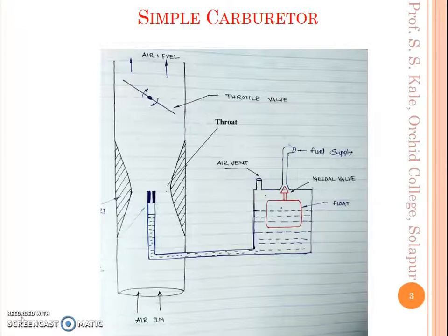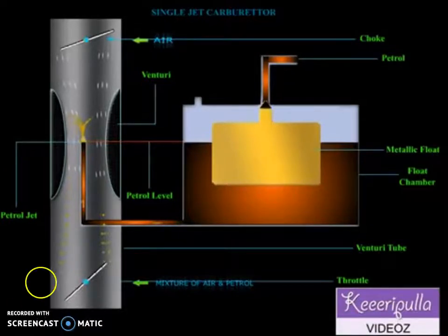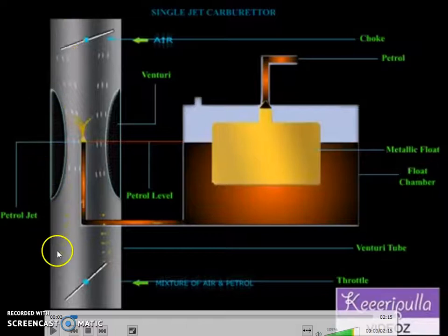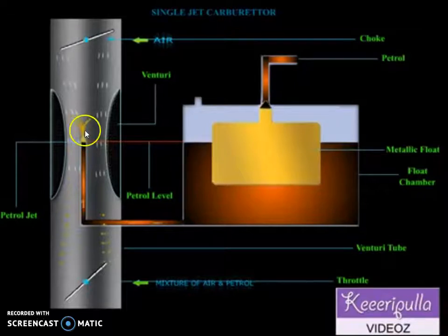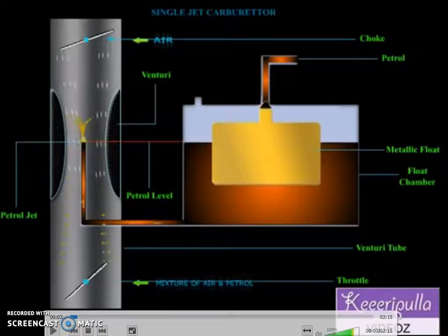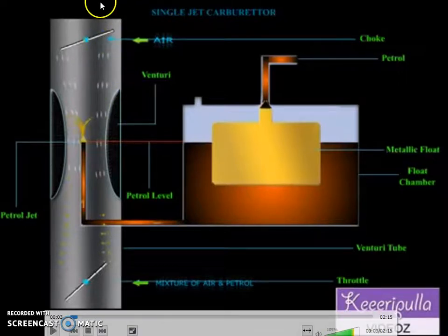Now let us see a video in which the concept of the carburetor gets clearer. This video is taken from YouTube. Before playing it, I want to point out the various parts we discussed: the carburetor tube, the venturi part, the float chamber, the float, the needle valve, the air vent, and the tube opening to the carburetor tube. Note that in this video air is coming from the top, whereas in the previous figure air was coming from the bottom.